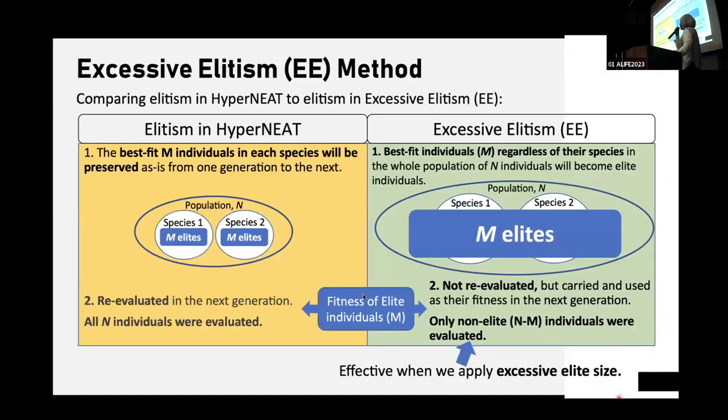The excessive elitism method that we apply in the algorithm was proposed by modifying the elitism in hyperneat, as mentioned before, which is commonly defined as the best-paid individuals in each species will be preserved as is from one generation to the next. And the elite individuals in the original hyperneat will be re-evaluated in subsequent generations. The difference in our method is that the best-paid individuals will become elite from the whole population. And genotypes will be passed on to the next generation. And elite individuals will not be re-evaluated. The fitness will not be re-evaluated and carried on and used as their fitness in the next generation.